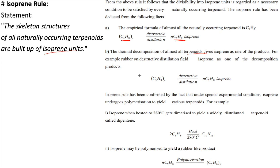The thermal decomposition of almost all terpenoids gives isoprene as one of the products. For example, rubber on destructive distillation yields isoprene as a decomposition product. Similarly, isoprene when heated at 280°C dimerizes to yield a widely distributed terpenoid called dipentene. Isoprene may also be polymerized to yield rubber-like products. These are the evidences suggesting that all terpenoids follow the isoprene rule.